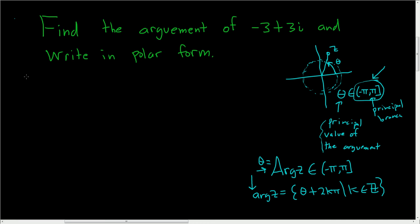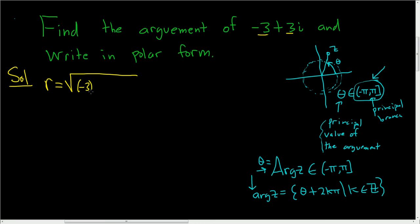Okay, let's go ahead and work this out. First we find the modulus of the complex number. That's the square root of the sum of the squares of the real and imaginary parts, so it's the square root of negative 3 squared plus 3 squared.